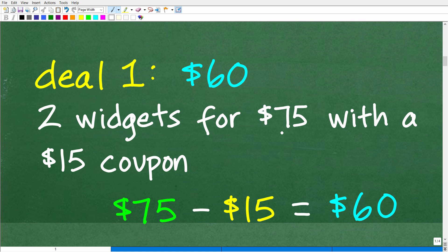Deal one is going to cost us $60. Two widgets for 75 bucks with a $15 coupon, $75 minus our coupon, we get to spend $60 for these two widgets. Now, is this a good deal or the one that we should take? Well, we won't know unless we calculate the other deal. And that's what I'm going to do right now.